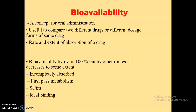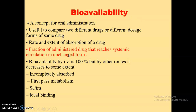Bioavailability: absorption and bioavailability are different. Absorption is the process of movement of drug from the route of administration to blood circulation, whereas bioavailability means the actual amount of drug that reaches the blood circulation and is available for action. Generally, this is useful to compare different drugs or different dosage forms of the same drug. Bioavailability is defined as the fraction of administered drug that reaches systemic circulation in unchanged form. Bioavailability varies according to the route of administration — in case of IV it is 100%, whereas in case of oral it is the minimum, as it requires crossing a number of barriers. Bioavailability also depends on factors like first-pass metabolism and route of administration.